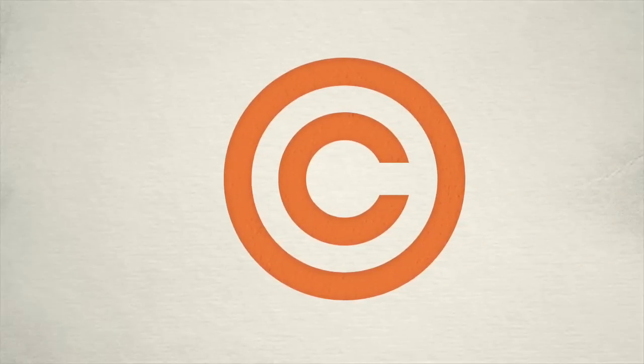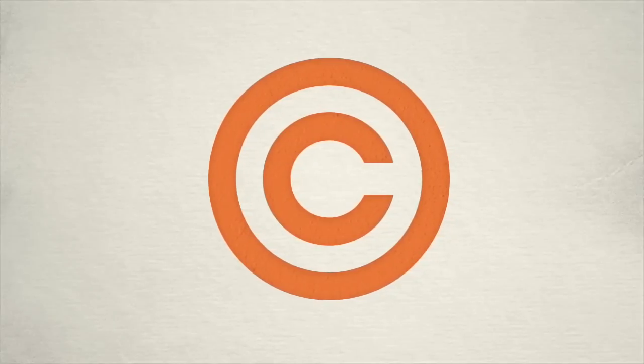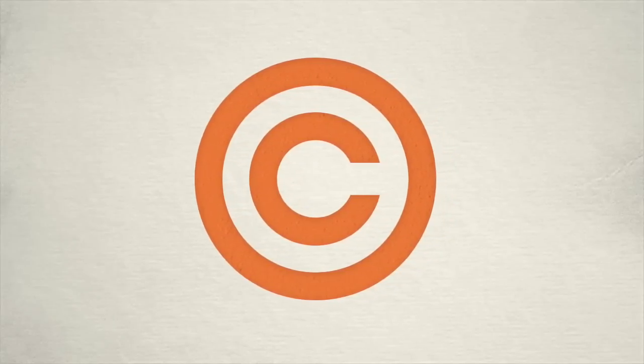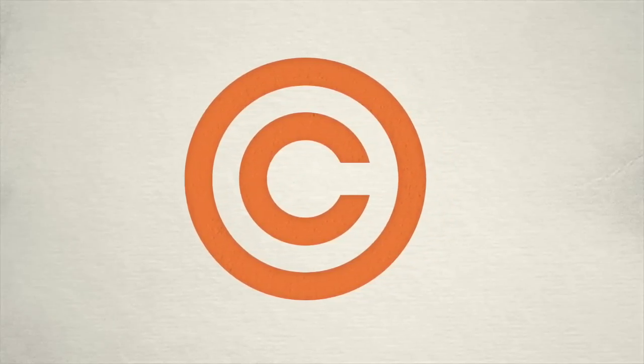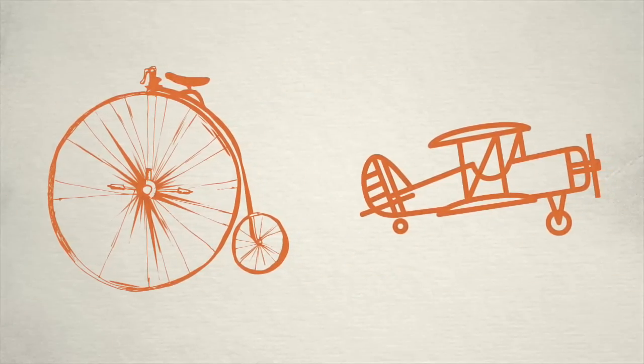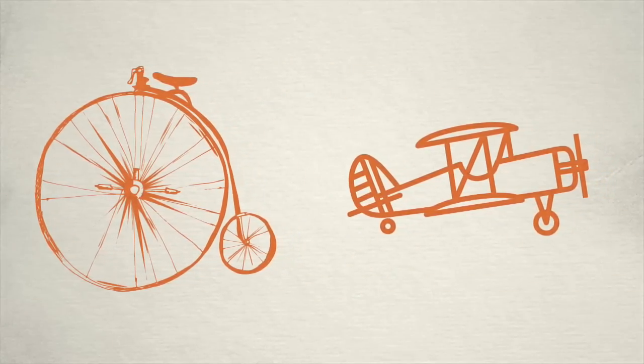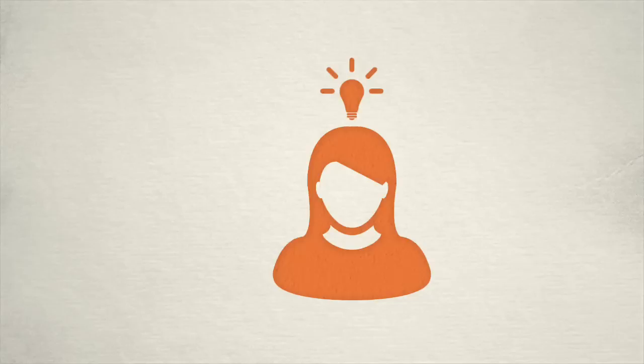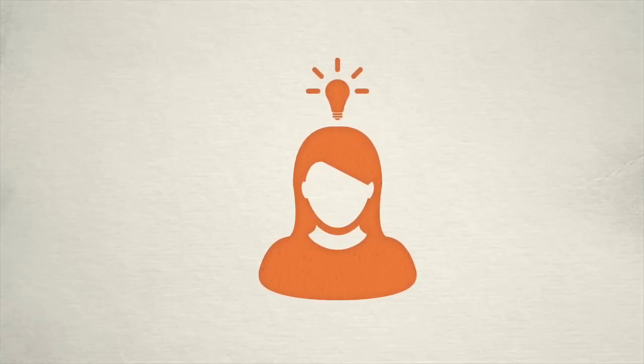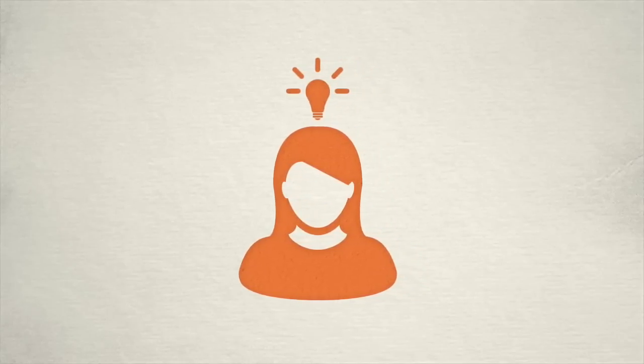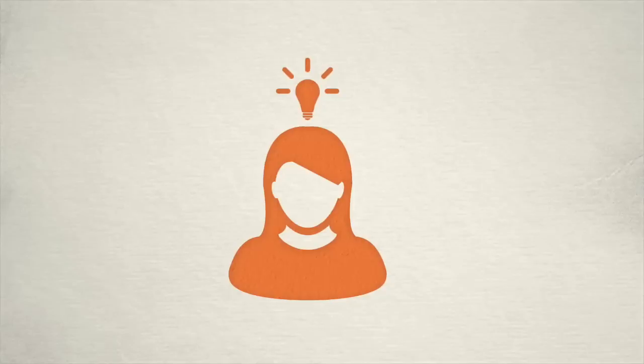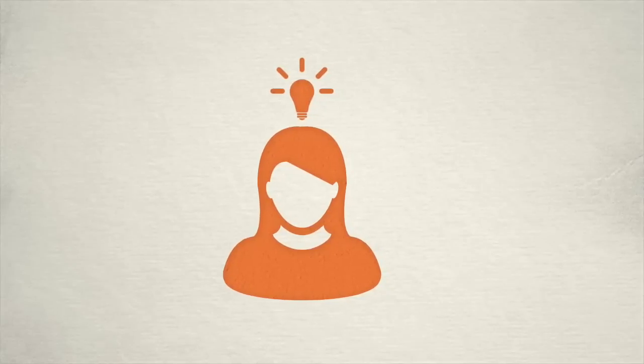The rule in copyright is that copyright only protects original works. This applies only to part three works, not part four subject matter. Original does not mean that the work has to be particularly novel or inventive. Instead, what original means in copyright is that the work originated from the author. The author created the work, they did not just copy it from somebody else.